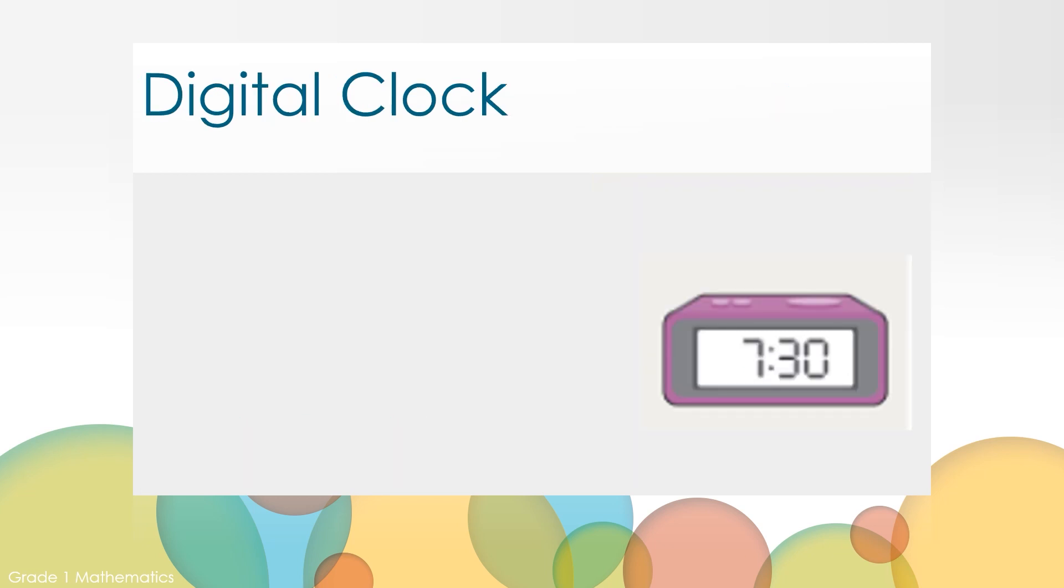Let's also look at a digital clock. Look at this digital clock. How is this clock different from an analog clock? This clock is different because it doesn't have minute hands and hour hands. Keep in mind that the hour is on the left of the colon and the minutes are on the right of the colon.